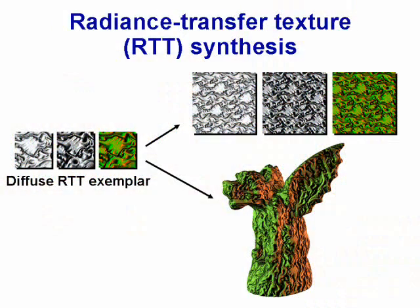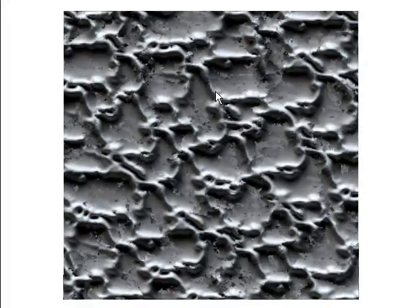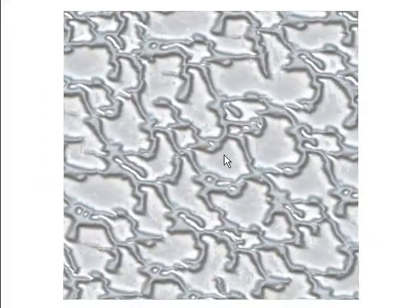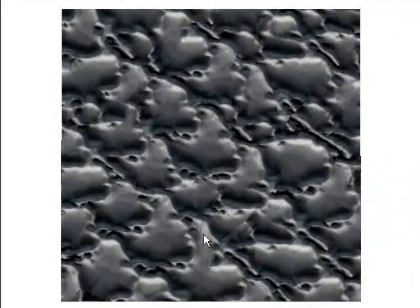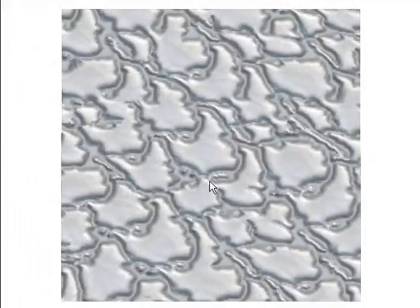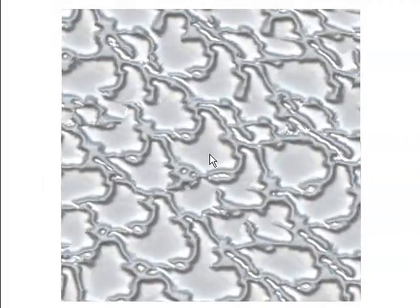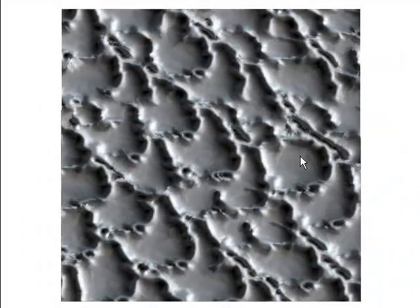A radiance transfer texture records the interaction of lighting environments with mesoscale geometry. It captures non-local effects like self-shadowing. Naive synthesis would result in inconsistent shadowing. By including radiance transfer in the appearance vector, we obtain consistent mesoscale structure.